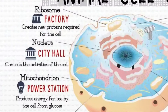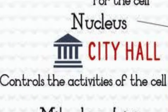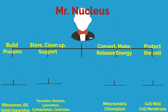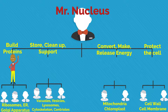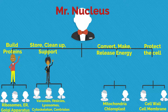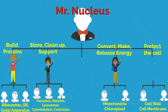Let's start off with the nucleus, which is the city hall for the cell. The nucleus controls all of the activities of Cell City. Let's just call him Mr. Nucleus — Mr. Nucleus controls all of the organelles in the city, including organelles that build and transfer proteins, organelles that store, clean up, and support the city, organelles that convert, make, and release energy for the city, and organelles that protect the city.